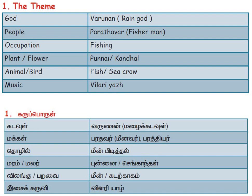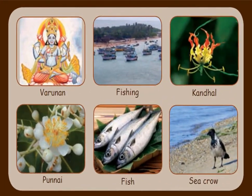To recap the theme of the Neythal region: the rain god is Varunan, the people are Paradavar or fishermen, and the occupation is fishing. The plant is Punnai and the flower is Sengandhal. The animal is fish and the bird is seagull, who comes to eat the fish.